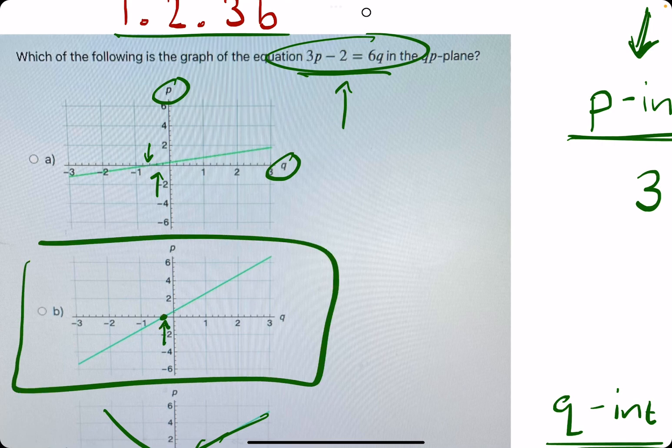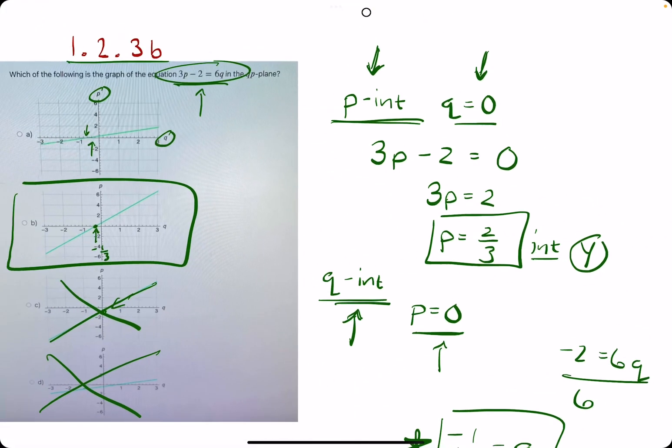So I'm thinking B is our best answer. We have negative 1/3 on the q-axis, and then for the p-axis, 2/3.